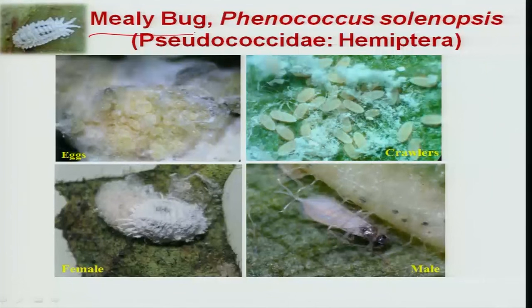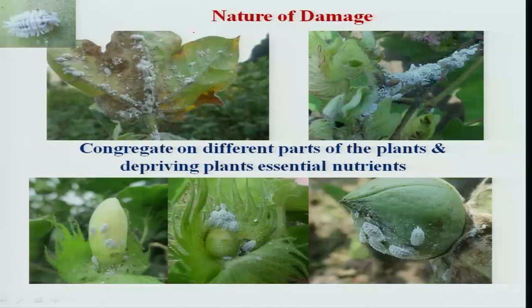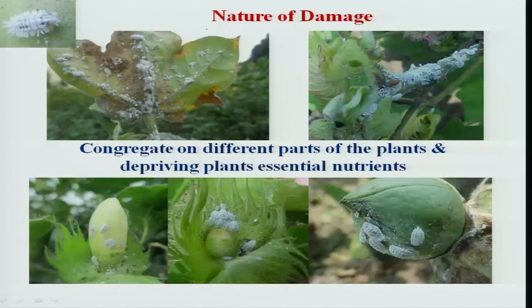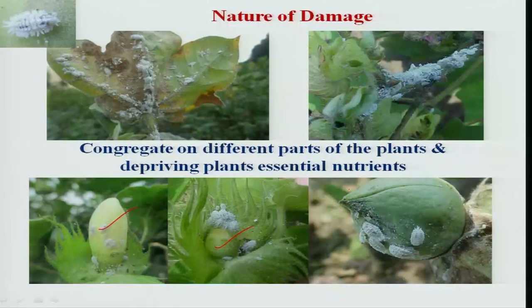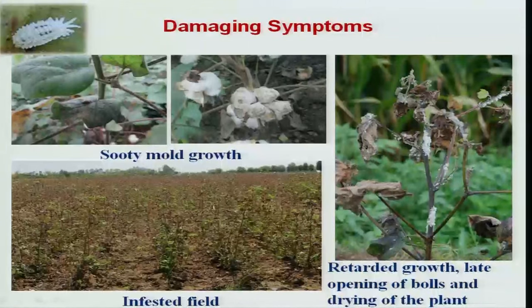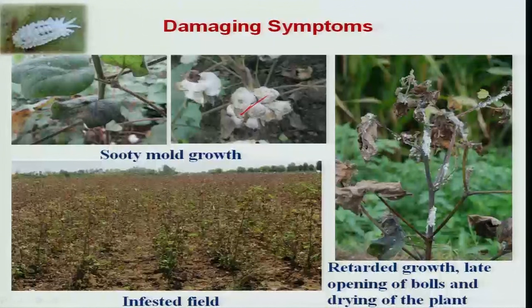Mealy bug has recently occurred throughout the country. Both crawlers, nymphs, and adults congregate on all parts of the plant — buds, squares, bolls, and shoots — causing complete drying of plants and sometimes deteriorating the quality of lint.